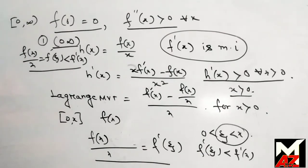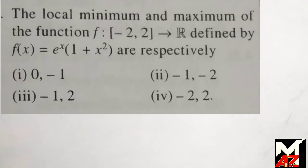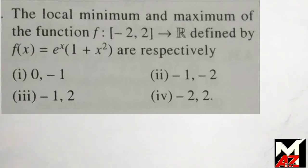Now the next question: the local minimum and maximum of the function f: (−2, 2) → ℝ defined by f(x) = e^x · (1 + x²) are, respectively: Option 1, 0 and −1; Option 2, −1 and 2; Option 3, −1 and 2; Option 4, −2 and 2.